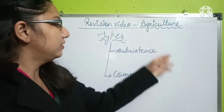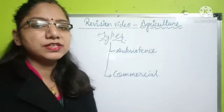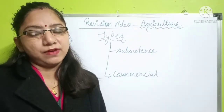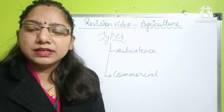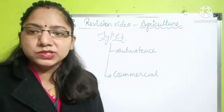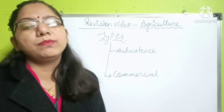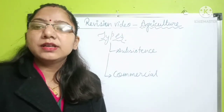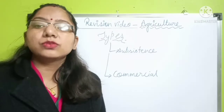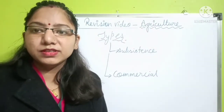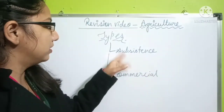Subsistence farming includes primitive subsistence farming and intensive subsistence farming. Primitive subsistence farming is the primary type, while intensive subsistence farming uses some simple tools and is slightly more advanced. One more is nomadic farming — including jhoom cultivation, shifting cultivation, and any farming done by nomads — which is also included in subsistence farming.